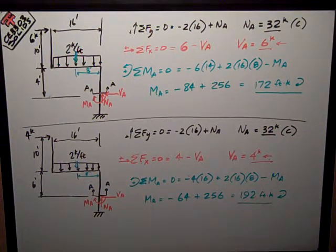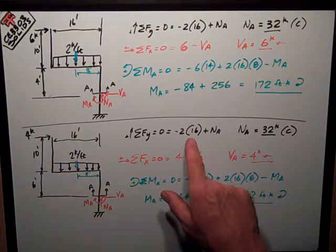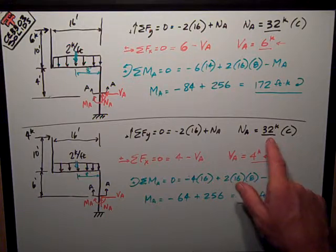Very similar problem, just slightly different dimensions and a different force here. Sum of the forces in Y, negative two times sixteen plus NA. I've got the same normal force, thirty-two kips compression.